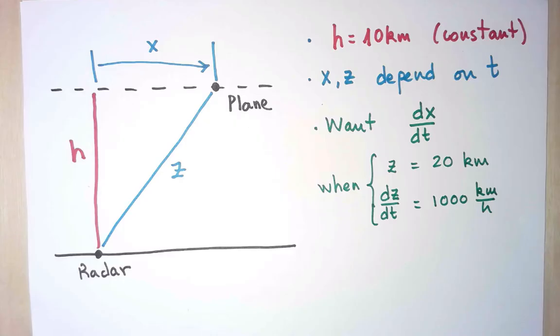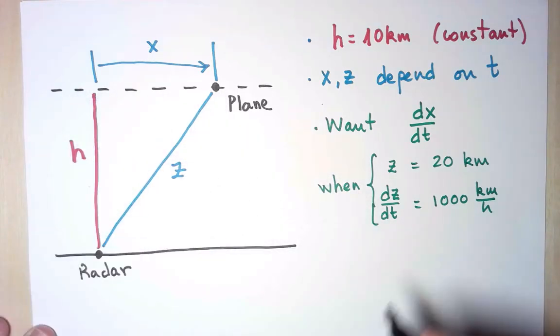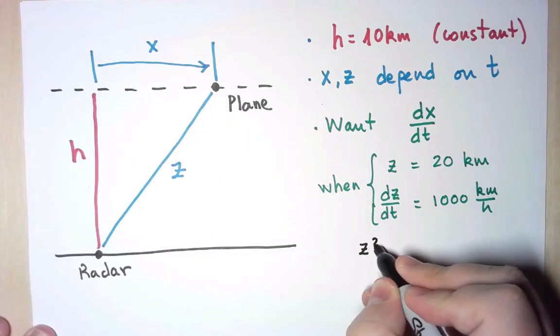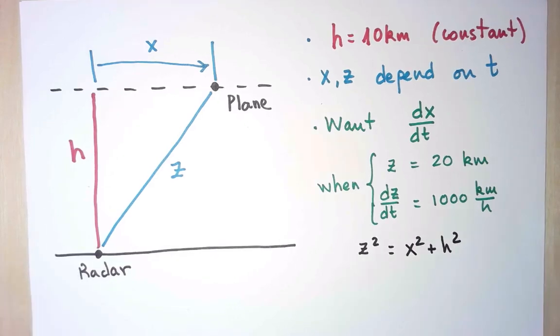In order to get a relation between the derivative of x and the derivative of z, I'm going to need a relation between them. And luckily I have a right triangle here. So using Pythagoras' theorem, I know that z² is equal to x² plus h². And that's the end of the setup.